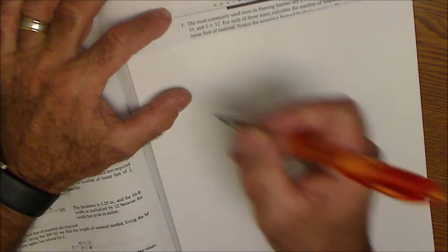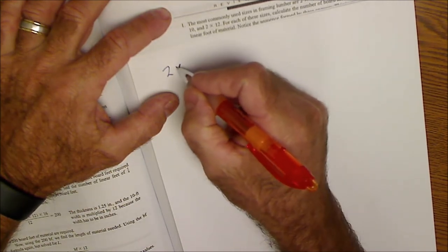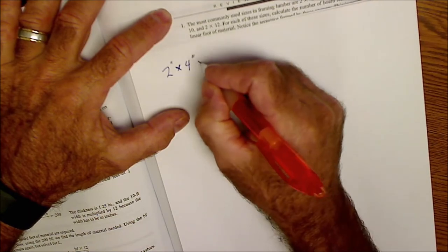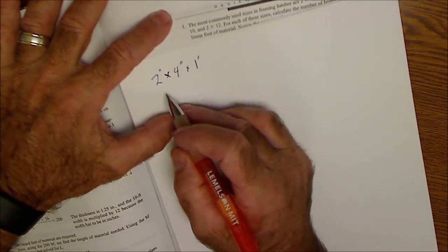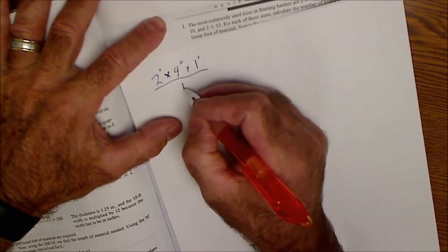So number one, the most commonly used framing lumbers are 2x4, 2x6s, 2x8s, 2x10s, and 2x12. For each of these sizes, calculate the number of board feet in one linear foot of material. So 2x4, and we're going to use the second equation because we're talking about framing lumber. So this is 2 inches by 4 inches by 1 foot. So that equation is going to be thickness times width times length in feet divided by 12.